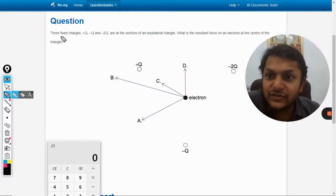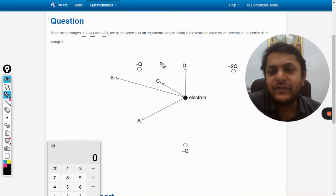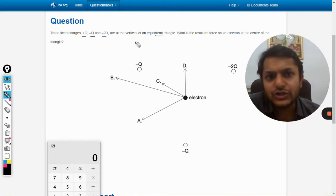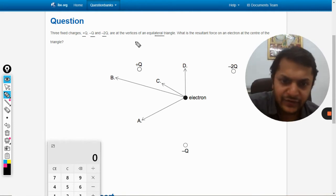In this question, there are three fixed charges: +q, -q, and -2q at the vertices of an equilateral triangle. What is the resultant force on an electron at the center of the triangle?